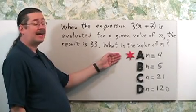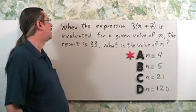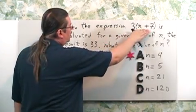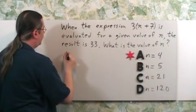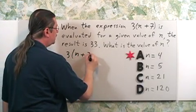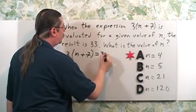Choice A, n equals 4, is the answer. To see that, let's go ahead and do what they say here. Let's make this expression equal 33. So you have 3 times the quantity, n plus 7, is equal to 33.